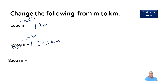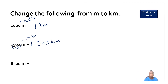For the third question we have eight thousand two hundred meters and we like to change it to kilometers. So we divide by one thousand — shift the decimal point three times to the left — giving me eight point two kilometers.